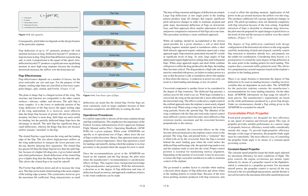With this information, a decision as to the degree of flap deflection and time of deflection based on runway and approach conditions relative to wind conditions can be made. The time of flap extension and degree of deflection are related. Large flap deflections at one single point in the landing pattern produce large lift changes that require significant pitch and power changes to maintain airspeed and glide slope. Incremental deflection of flaps on downwind, base, and final approach allows smaller adjustments of pitch and power compared to extending full flaps all at one time.